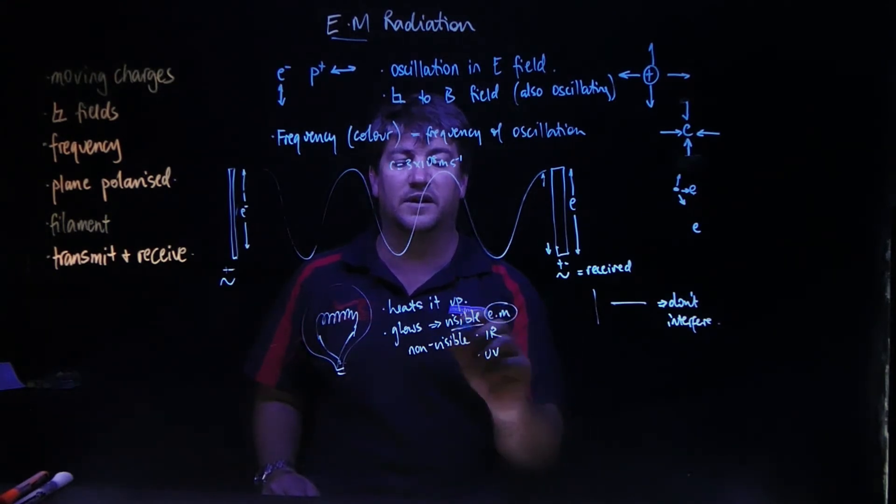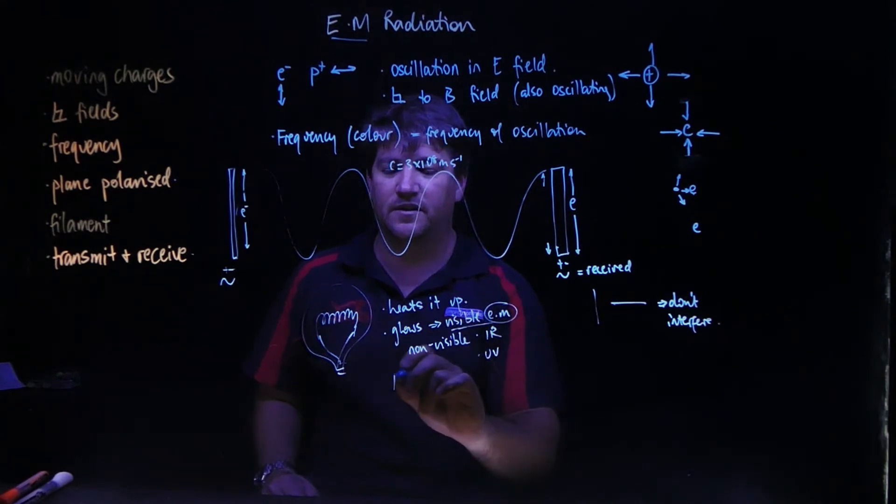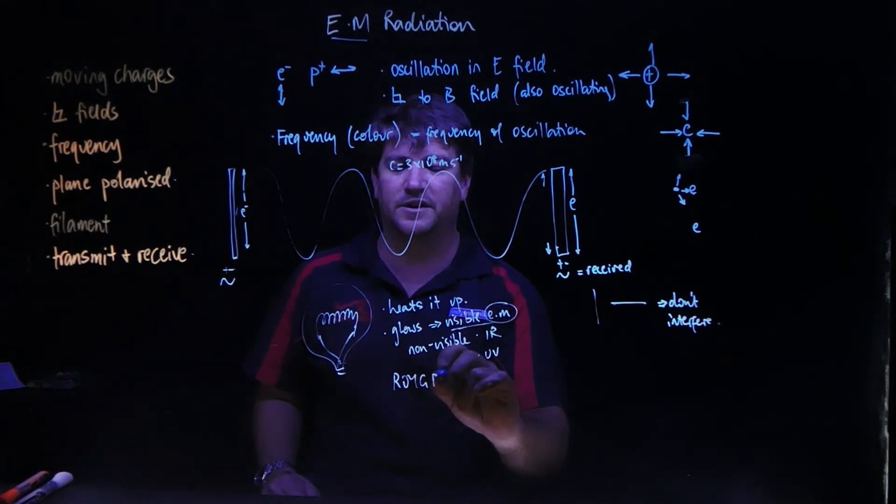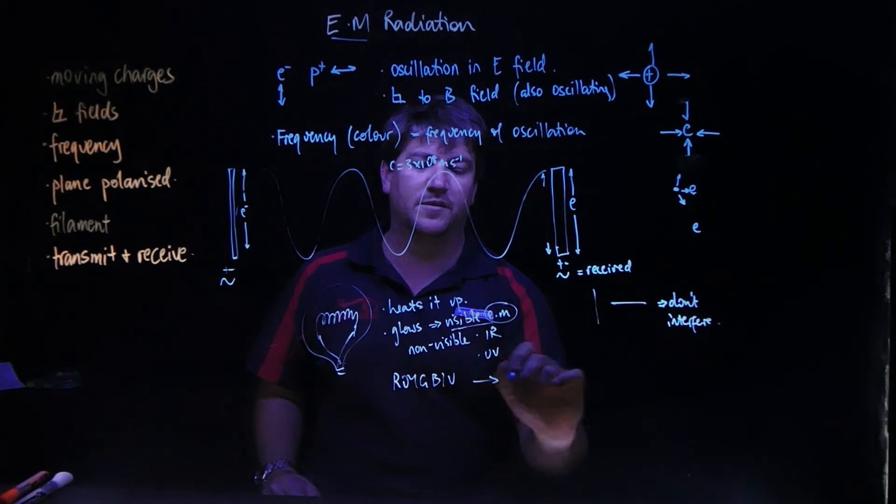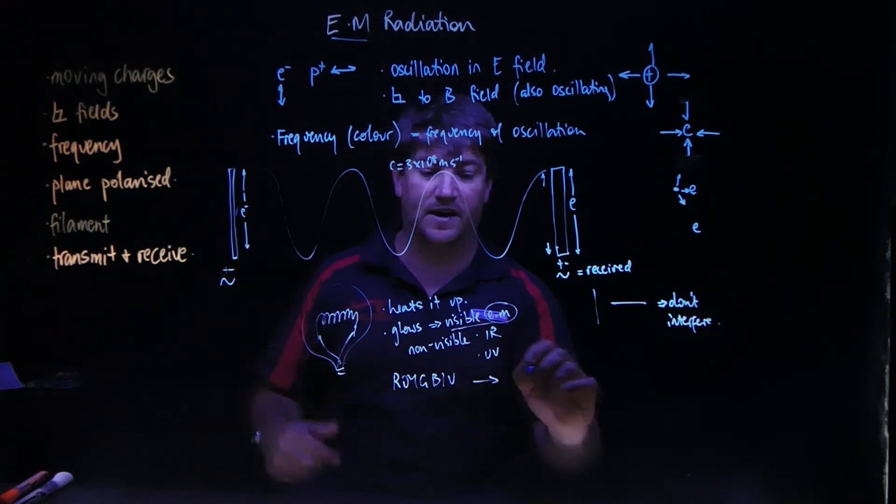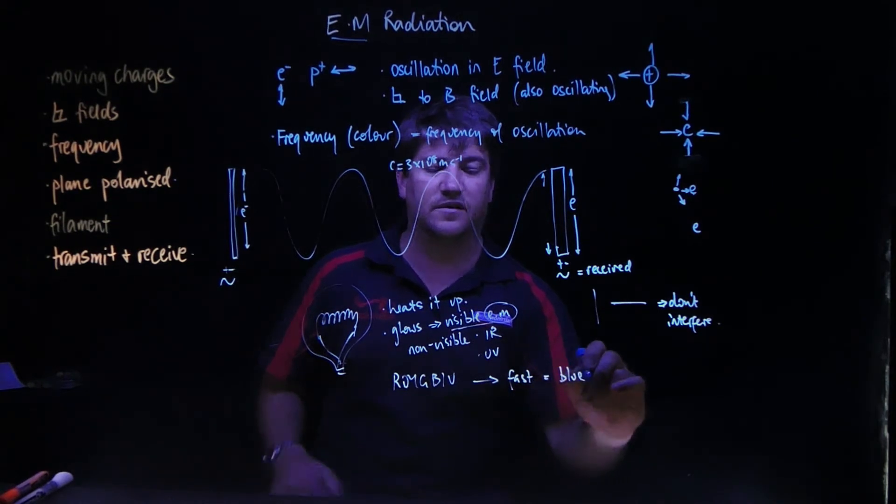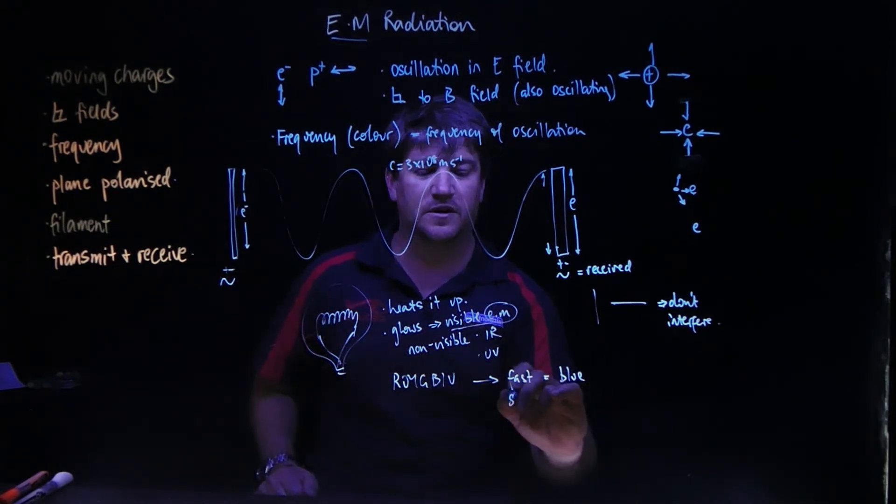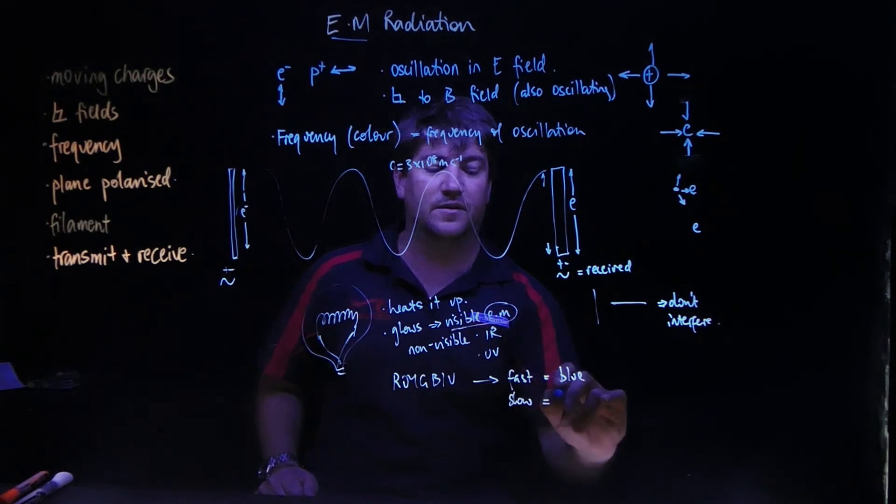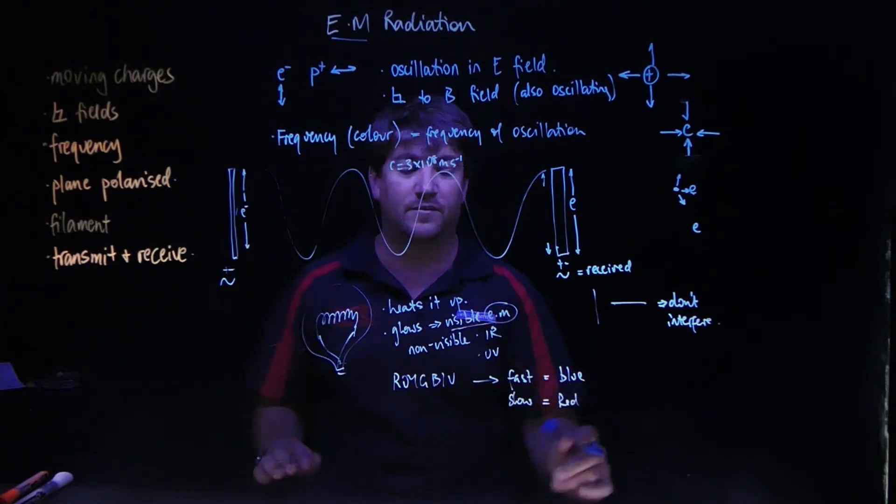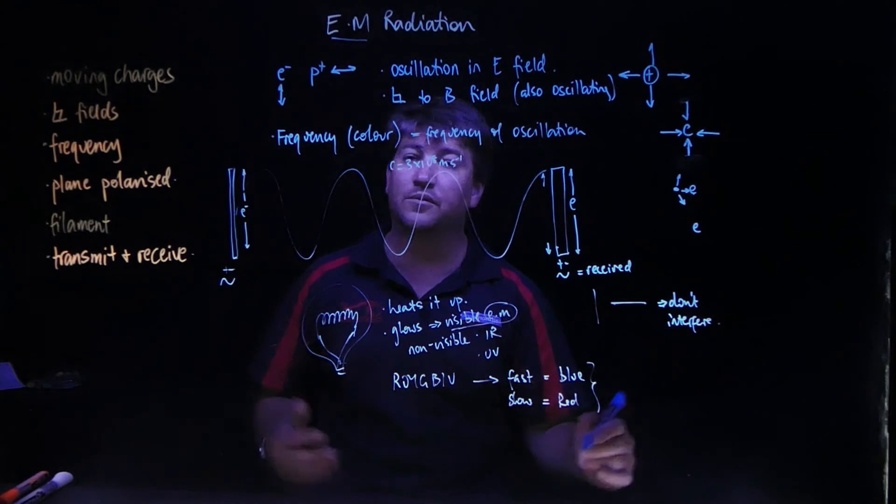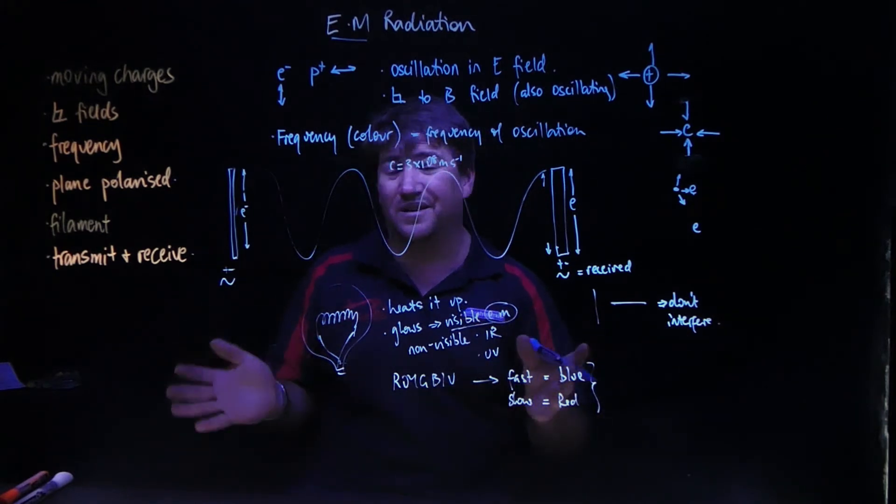The colors that it's giving off - ROYGBIV - because some of the particles in this filament are vibrating really really fast, so it's kind of the BIV end of the spectrum, and some of them are vibrating slower, so they're closer to the red end of the spectrum. You have this mix all through and it ends up looking kind of like white light.